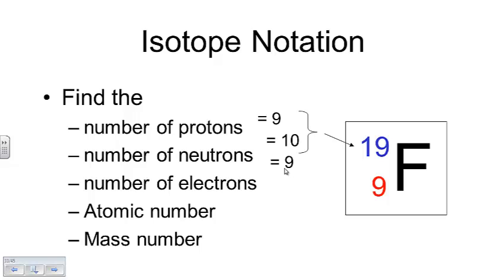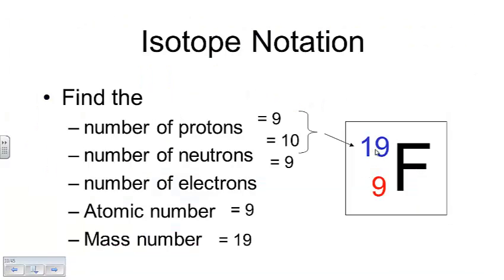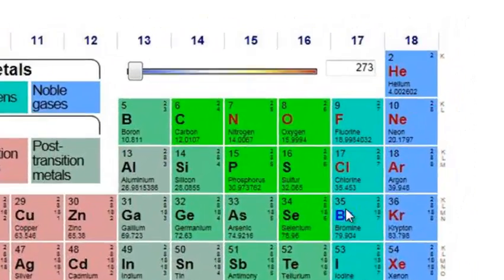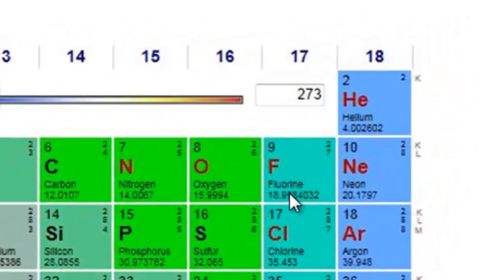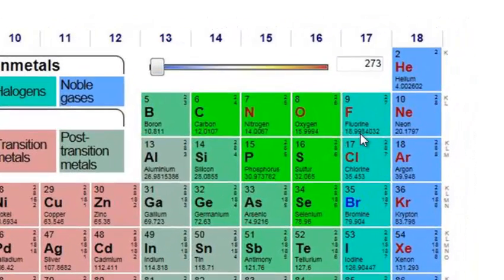If this were an atom, it would have 9 electrons. The atomic number is 9 and the mass number is 19. Note that 19 is close to but not exactly the same as what you see on the periodic table. The mass number for fluorine on the periodic table is 18.9984032 — that's an average mass number. What that tells you is not all examples of fluorine have 10 neutrons; there must be some with fewer, because otherwise the average would not be below 19.